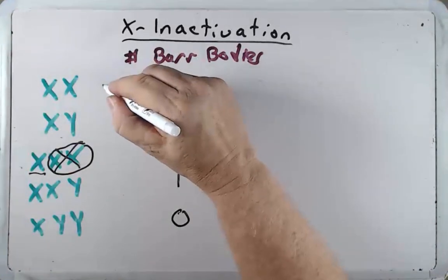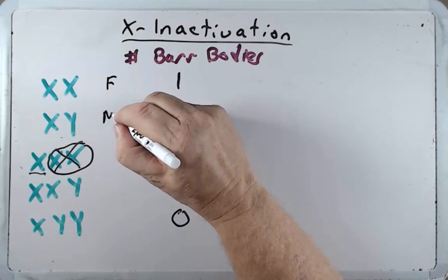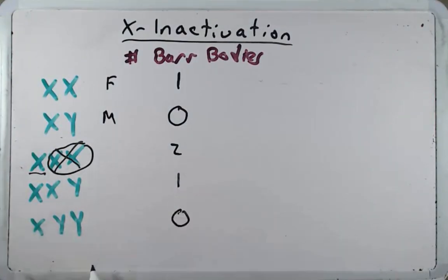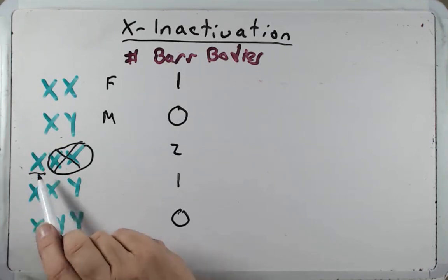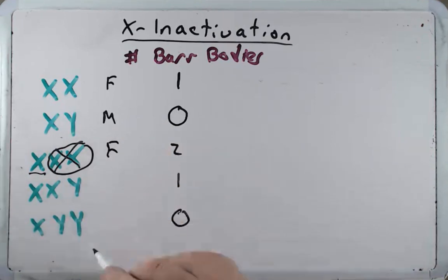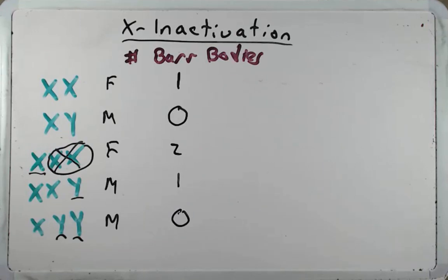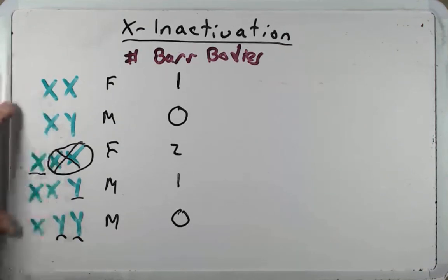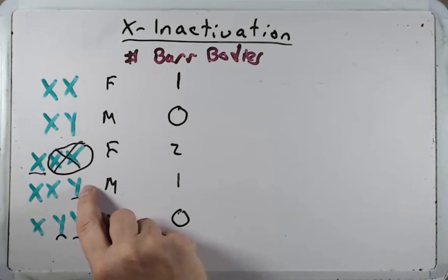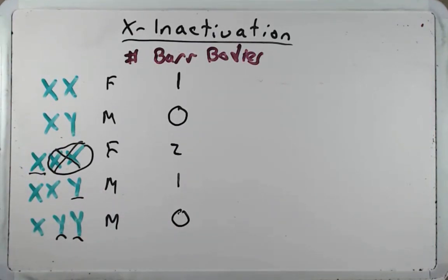We can also predict sex from these chromosomal combinations. XX individuals have no Y chromosome, so they are female. XXX individuals are also female. XXY and XYY individuals both have a Y chromosome and therefore carry the SRY gene, making them male. Any time there's a Y chromosome, the individual will be male. On a test, you can assume the SRY gene is not mutated unless I specifically indicate otherwise.